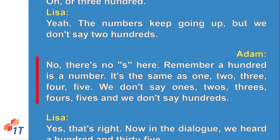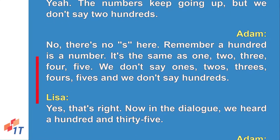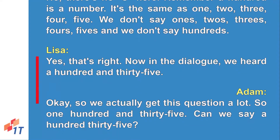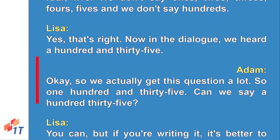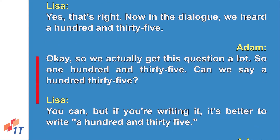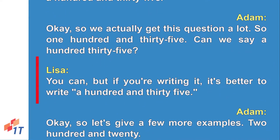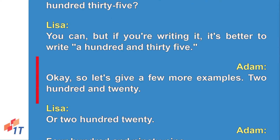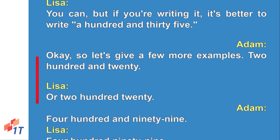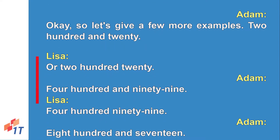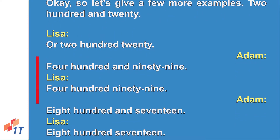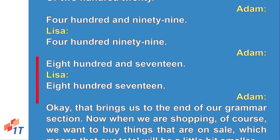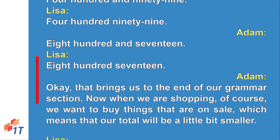Remember, 'a hundred' is a number — it's the same as one, two, three, four, five. We don't say 'ones, twos, threes, fours, fives,' and we don't say 'hundreds.' In the dialogue we heard 'a hundred and thirty-five.' You can also say 'a hundred thirty-five,' but if you're writing it, it's better to write 'a hundred and thirty-five.' More examples: two hundred and twenty, four hundred and ninety-nine, eight hundred and seventeen.